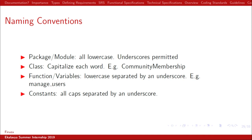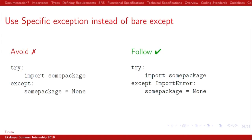Naming conventions: for constants, use all caps; for functions, use small case with an underscore; for classes, capitalize each word — like CommunityMembership. Use specific exceptions instead of a bare except. The left-hand side is what to avoid, the right-hand side is what to follow. When importing a package, instead of writing 'try import some package, except: some_package = None', write 'except ImportError'.